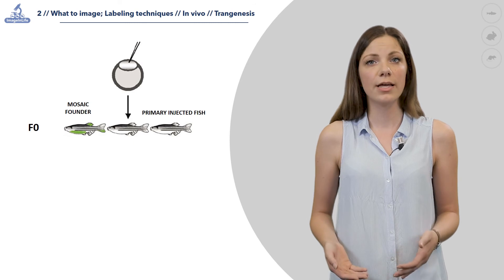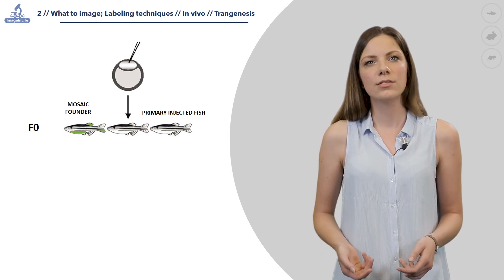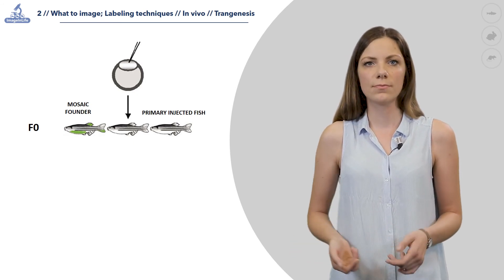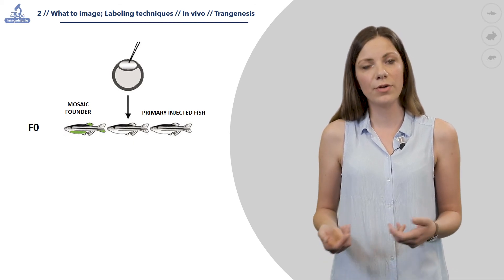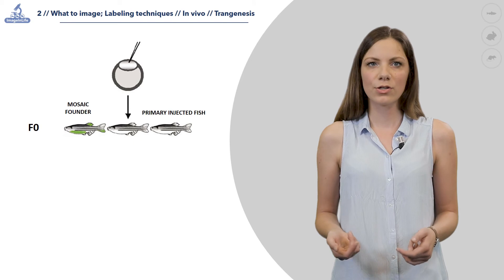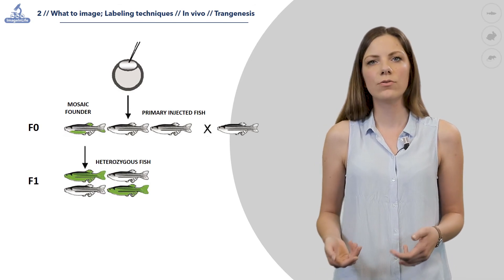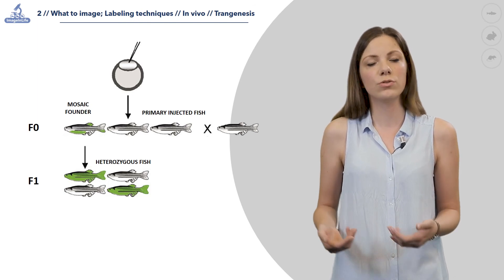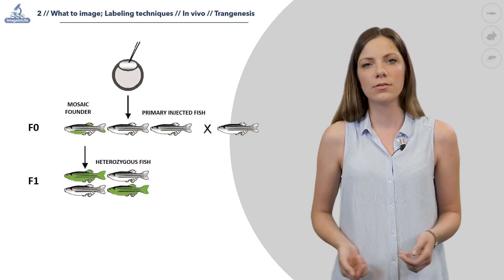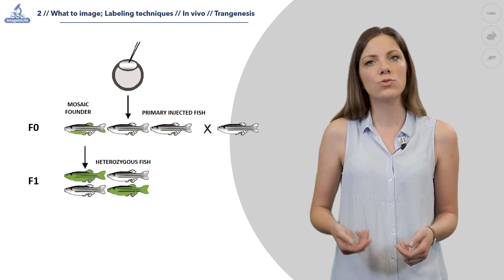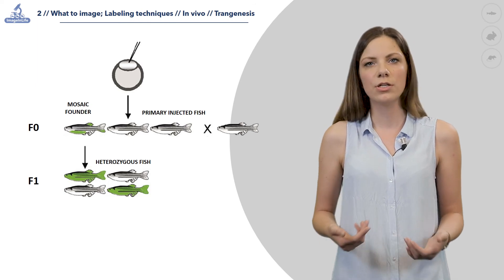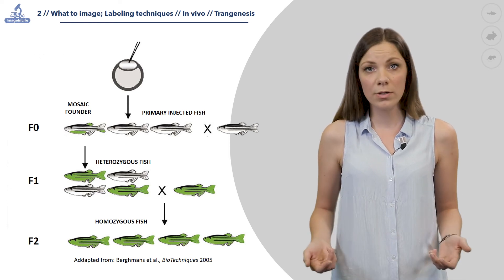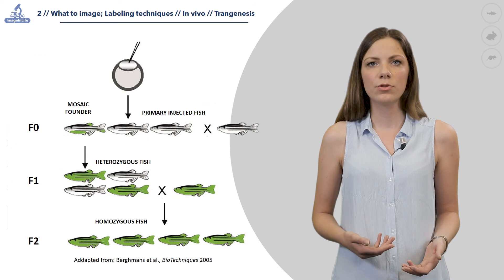This generation of injected embryos is called F0, and it contains both negative fish and positive fish with mosaic expression, which we call founders. The founders are selected and raised to adulthood, then crossed with wild-type fish and screened to find founders that have the insertion in the germline and transmit fluorescent expression to their progeny, called generation F1. When F1 is raised to adulthood, positive fish can be crossed to obtain F2 homozygous fish, which will all be positive, expressing the fluorescently labeled protein of interest.